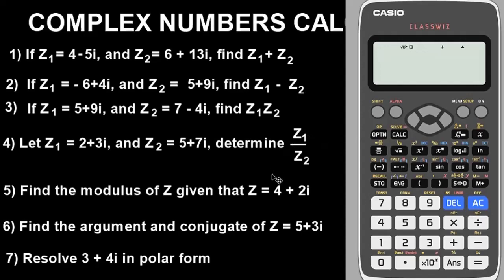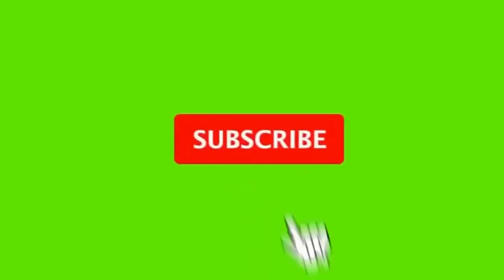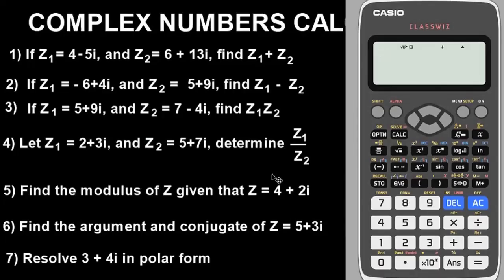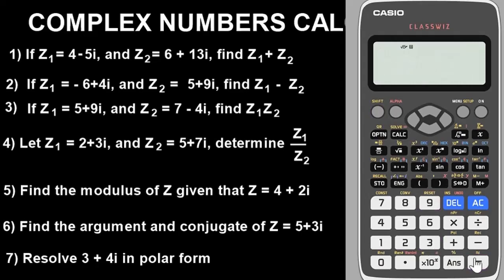This is all you need to know about complex number calculations with the Casio calculator — the fx-991ES and fx-570ES. I hope you learned something interesting. If you are new to our channel, ensure you subscribe and like, share, and comment on this video. Feel free to leave any questions in the comment section below. Don't forget to clear your calculator when done — press Shift to initialize and return to default mode. Thanks for watching — see you in the next video.